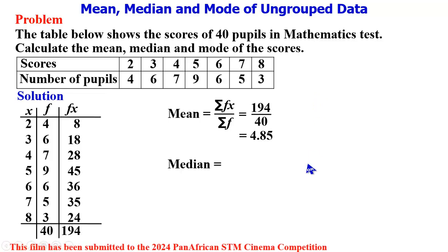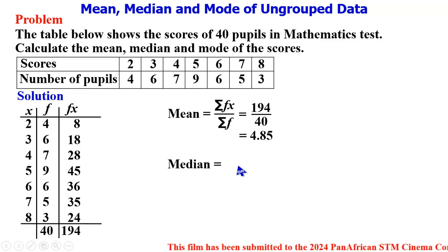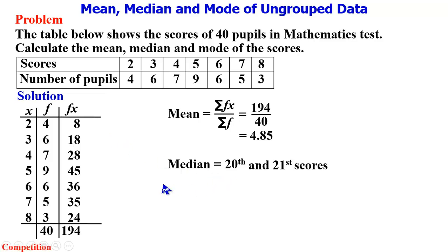Because the total population is even, we are going to be looking at two numbers falling in the median position, so that's going to give us the 20th and the 21st scores. To obtain this from the table, it will be necessary to create an additional column, and that additional column is cumulative frequency, and I will be calling it cf.